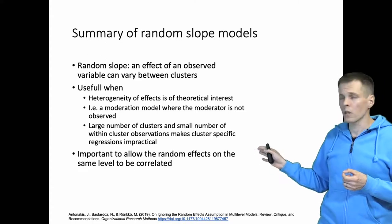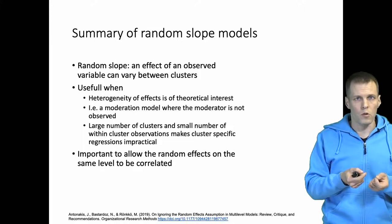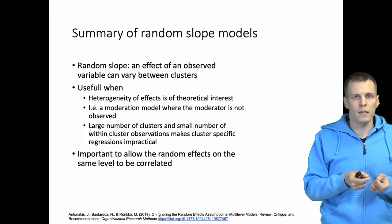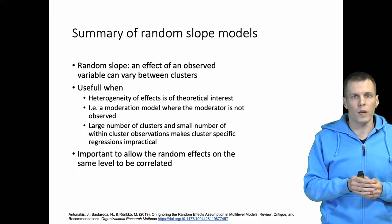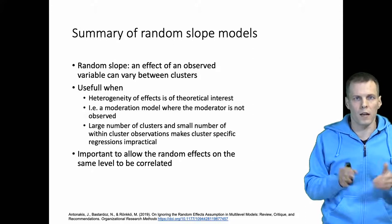It's important to remember that when you do this analysis, you allow the random effects that are on the same level to be correlated. You don't constrain the intercept and slope of a regression line to be uncorrelated. That doesn't make any sense.